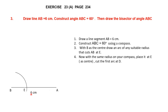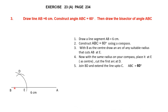Now with the same radius — don't change the radius on your compass — place it at E and cut the first arc at a point D. So we placed the needle on B and drew the arc, then placed it on E and cut that arc. Now join BD and extend the line up to C. We've joined BD and extended the line up to point C. Now angle ABC is 60 degrees.